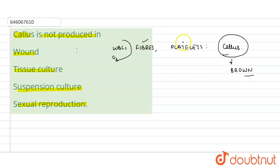It is made up of platelets and fibers. Next is tissue culture. In tissue culture, when we take any cell, mostly the meristematic cell, when it starts dividing, it initially forms a mass of cells which is called callus.